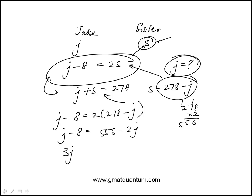Add 2J to both sides. This becomes 3J, and then I have to add 8 to both sides, so that becomes 564, which means J, Jake's weight is 564 over 3.